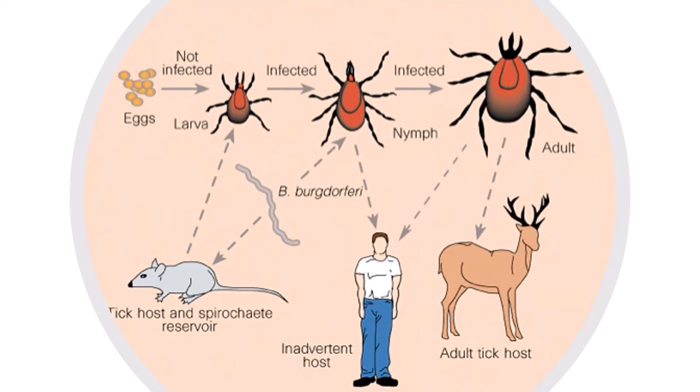We can also become infected from the bite of an adult tick harboring the bacterium. Infected mice, birds, and deer act as reservoirs for the bacteria. The transmission of Lyme disease increases when populations of mice and deer are high in an area. We will explore this more in episode 4.